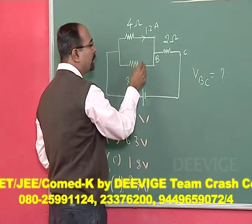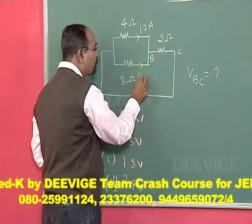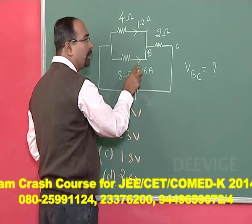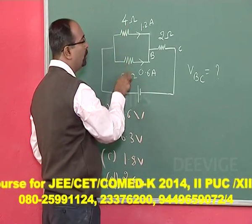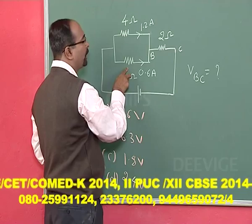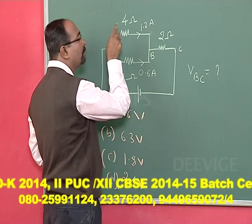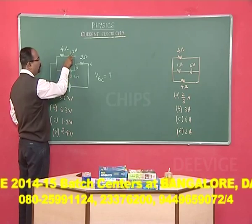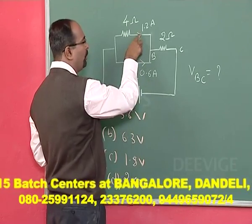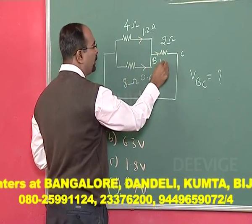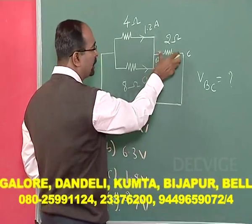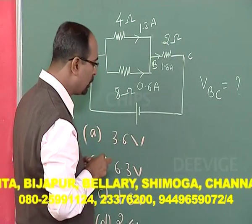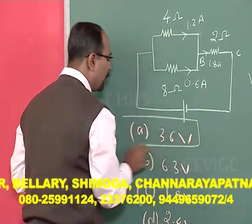Current is 1.2 amperes in the 4 ohm branch, so the current through the 8 ohm branch must be 0.6 amperes. The ratio of resistances is 1:2, therefore the ratio of currents must be 2:1. This branch is 1.2, therefore the other is 0.6. Adding them: 1.2 plus 0.6 gives 1.8 amperes of total current. Voltage is given by total current multiplied by resistance: 1.8 into 2 equals 3.6 volts. Option A is correct.